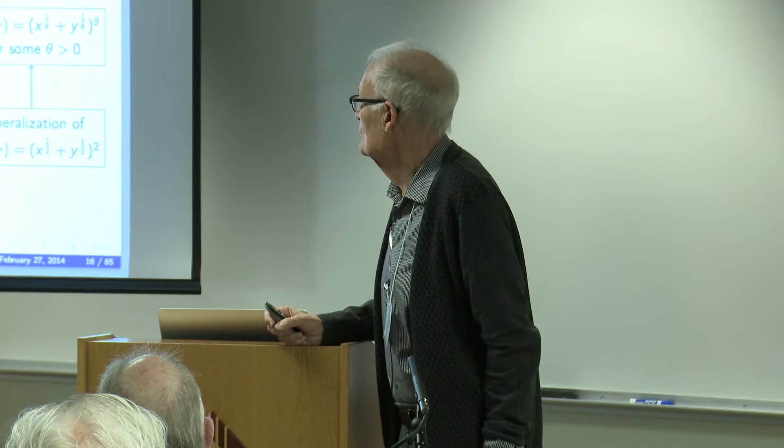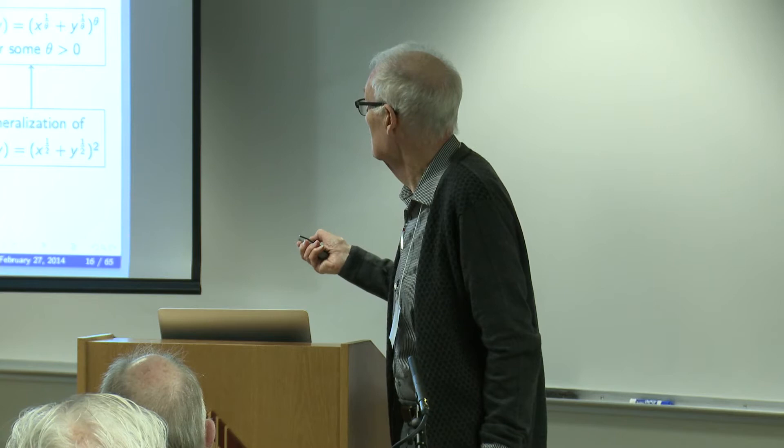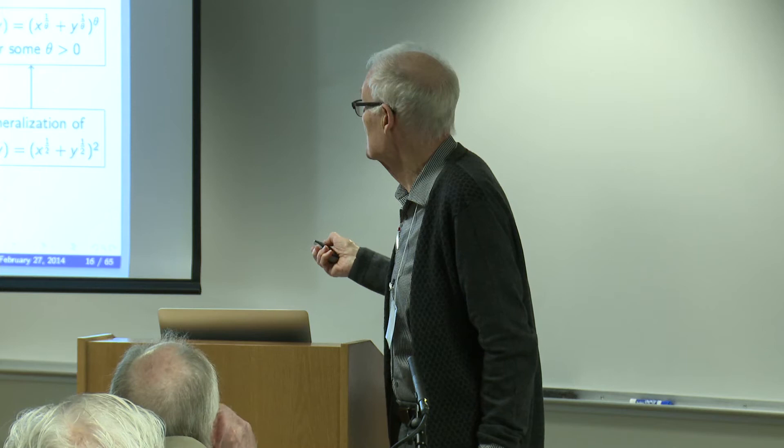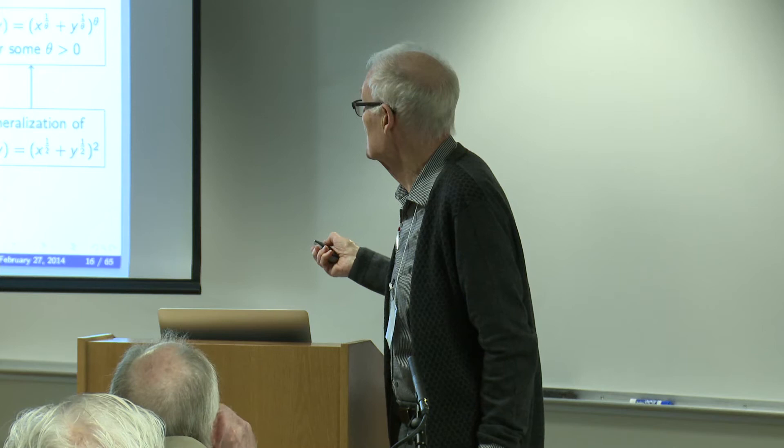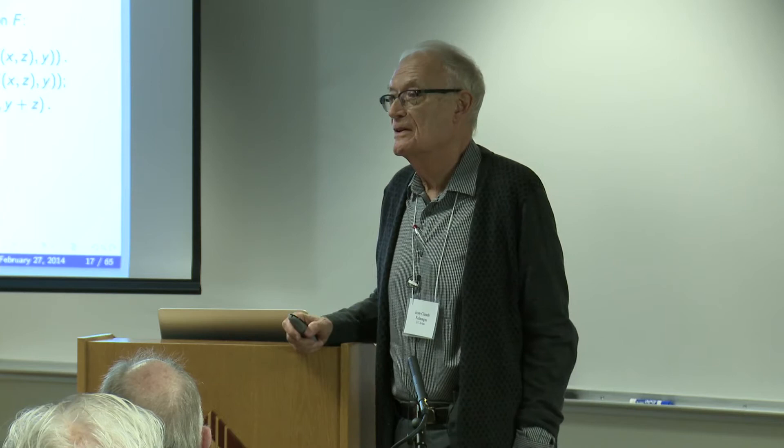To summarize: if you assume associativity, what you get under a monotonicity condition is that f has that representation. If you pair that with meaningfulness, you obtain this form as the only one, which is of course a generalization of the usual form of the Pythagorean theorem.